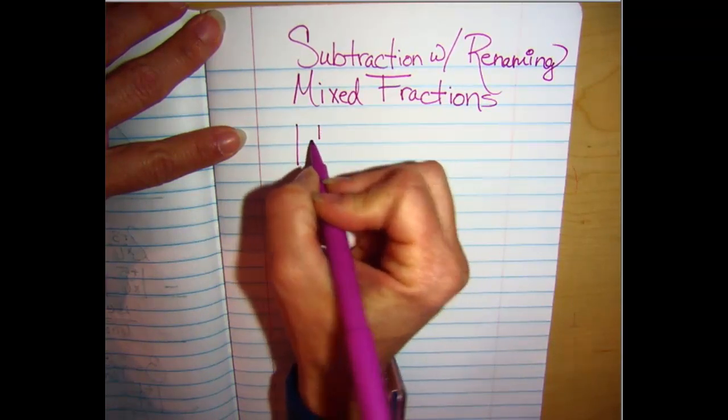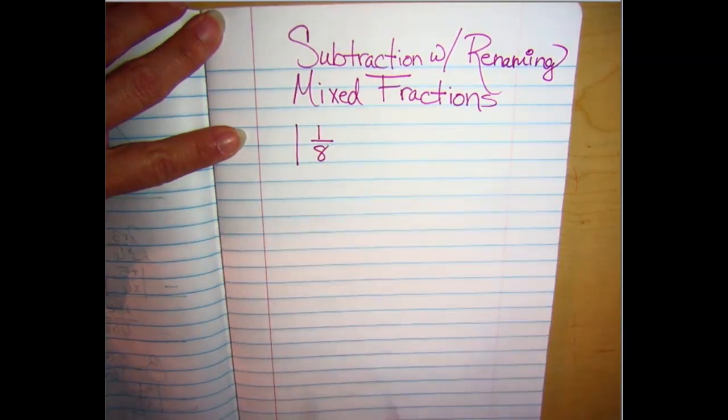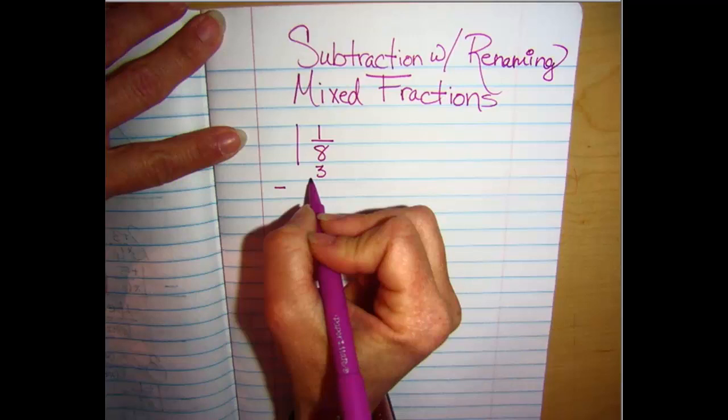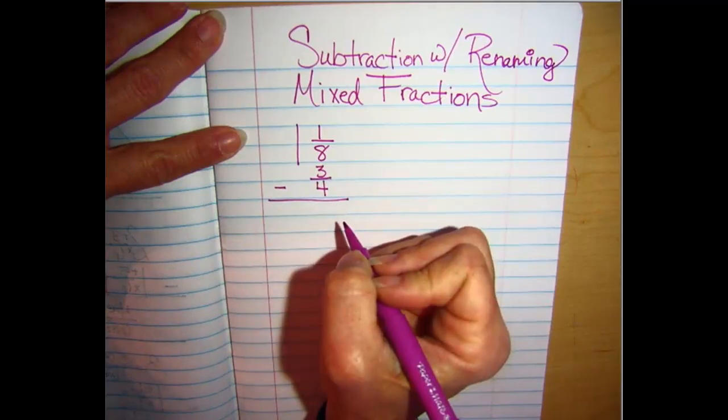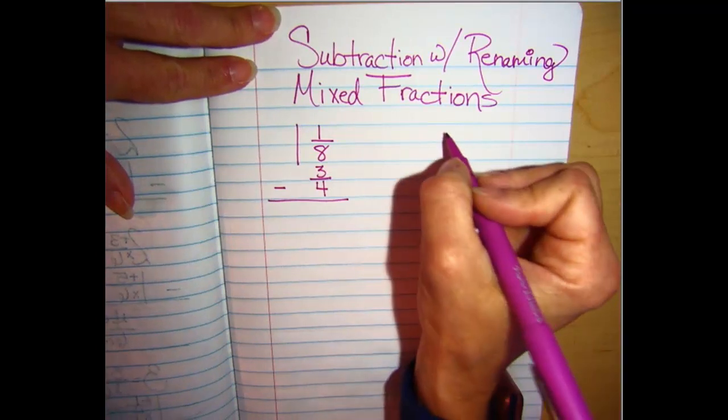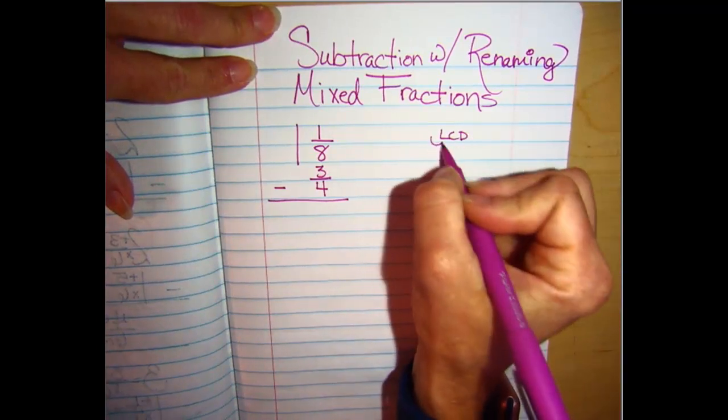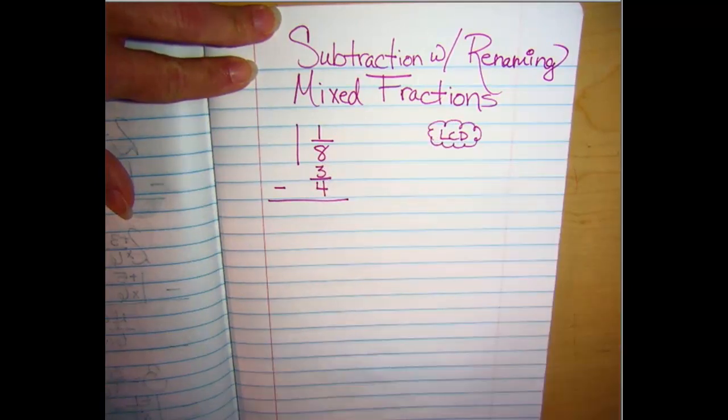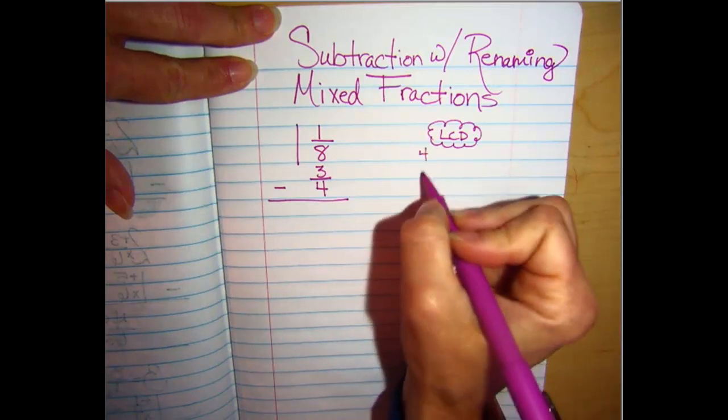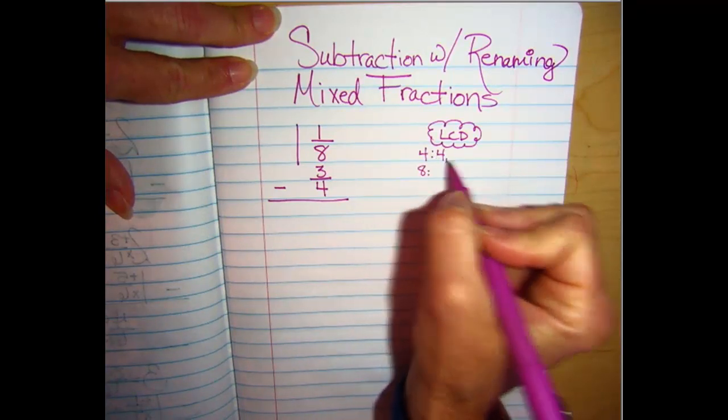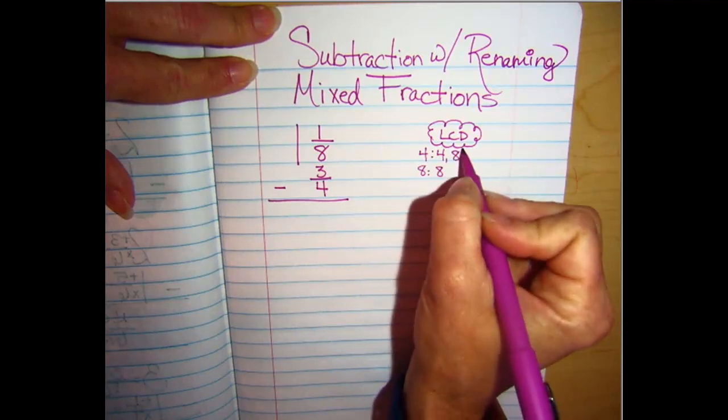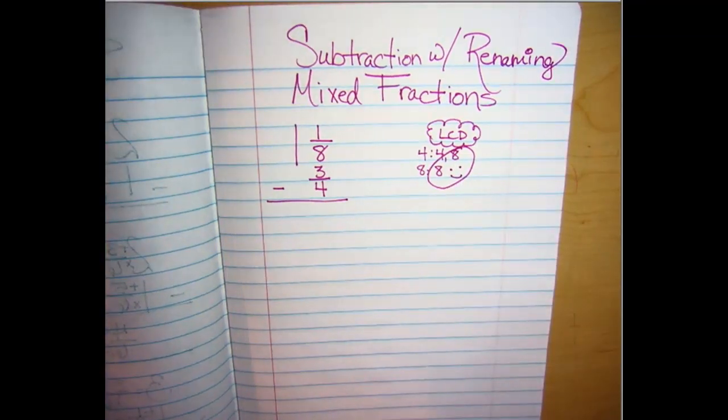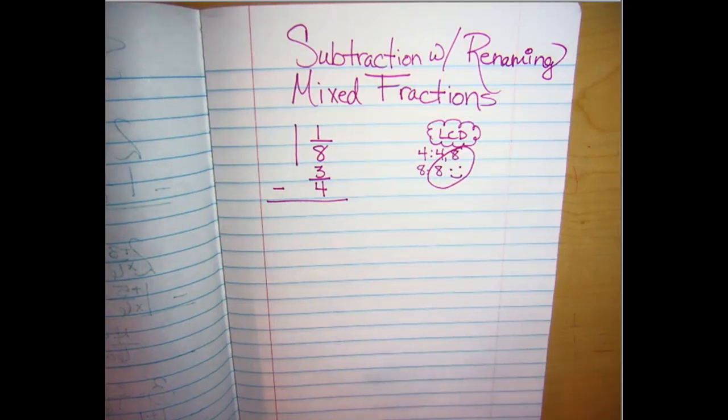Let's do 1 1/8 minus 3/4. This one's going to be pretty easy. So yesterday we practiced this and we've been practicing this all week. We've got to start with our least common denominator because I can't have that eighth and fourth work together. So if I look at the multiples of 4 and the multiples of 8, most of you guys are not having to do this anymore because you're kind of seeing the patterns.